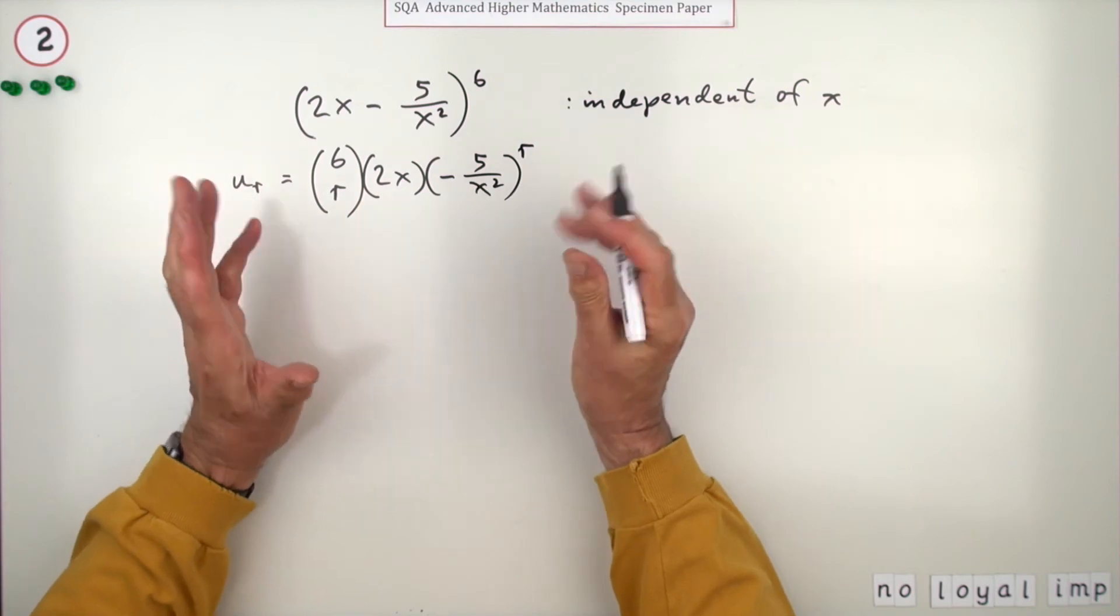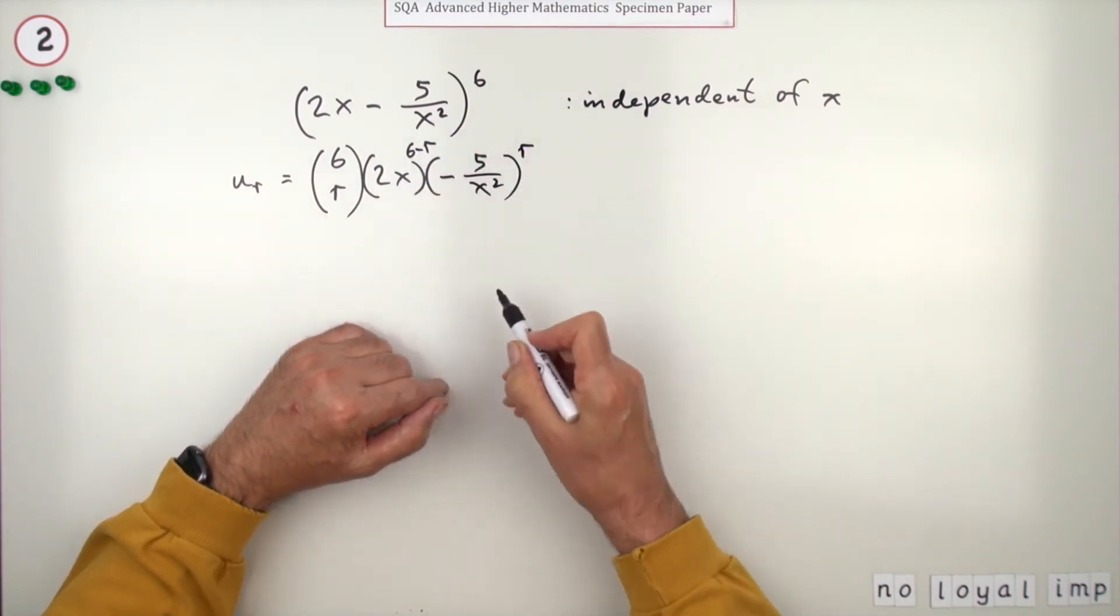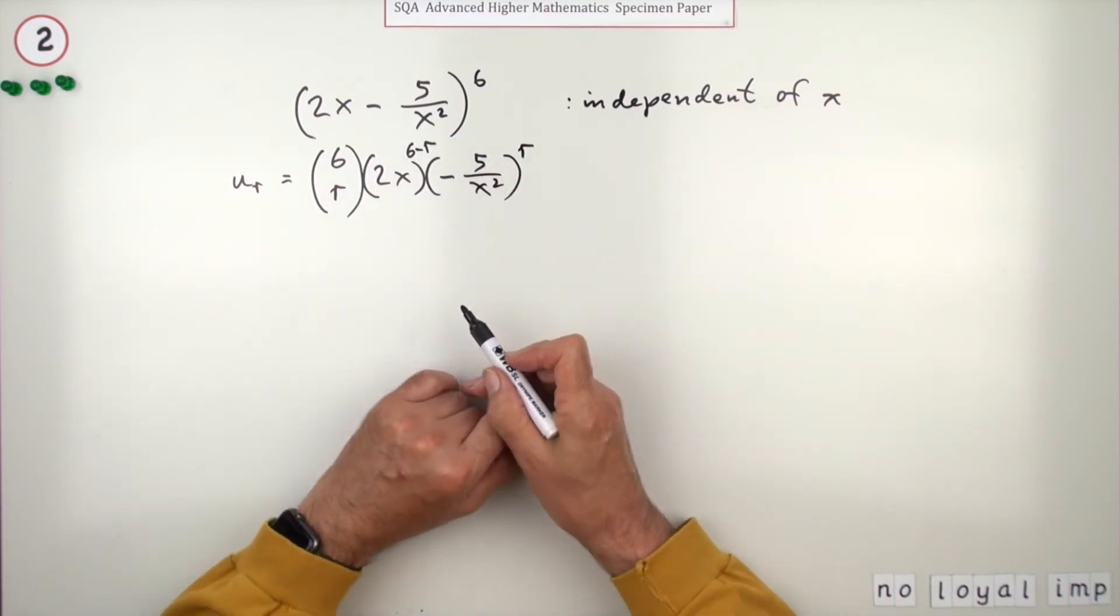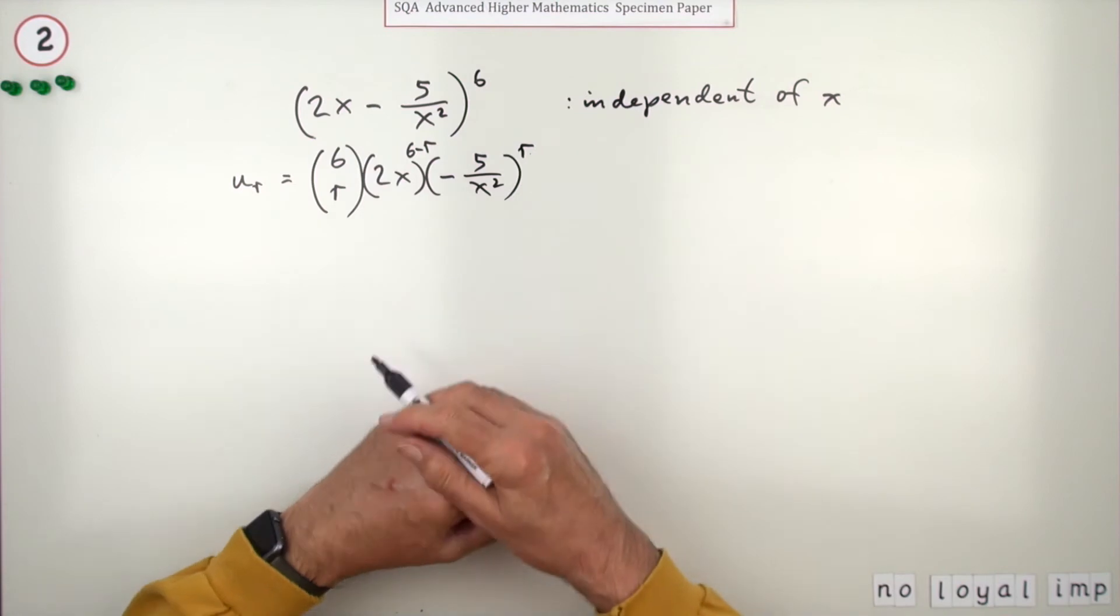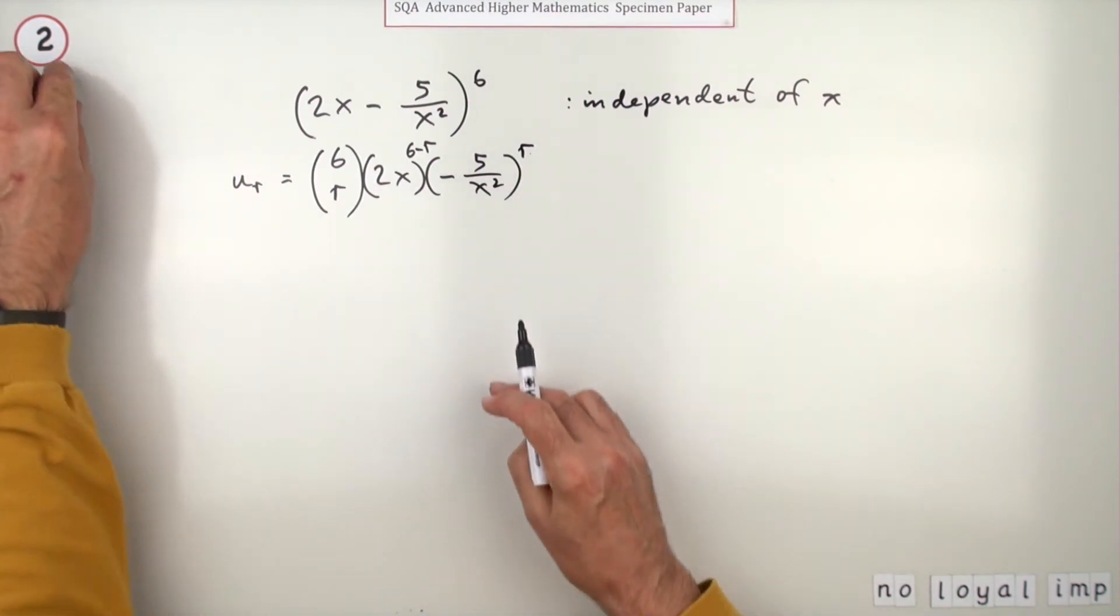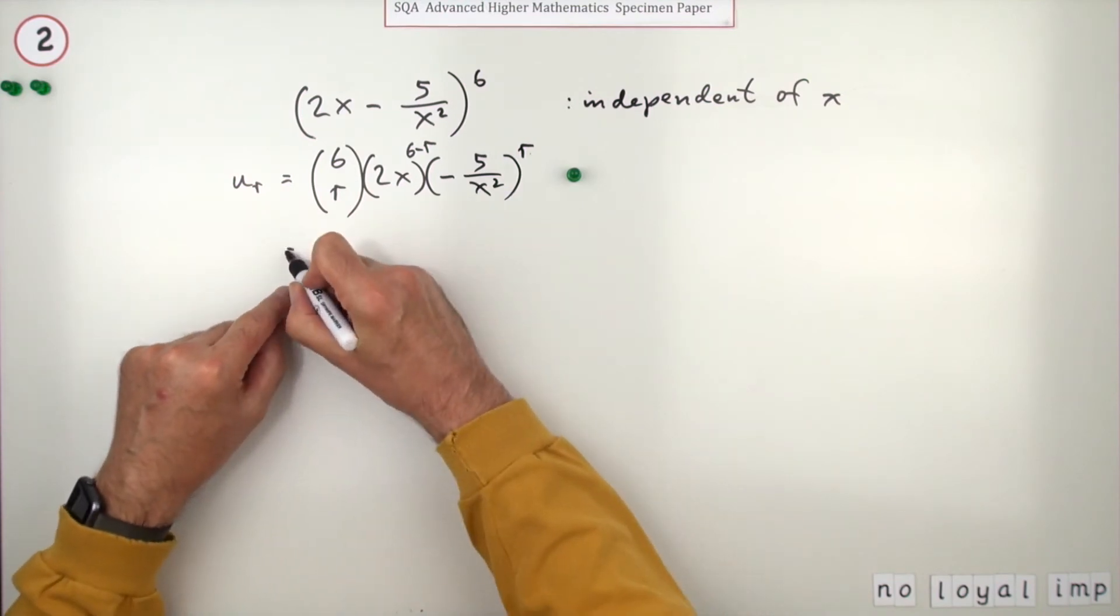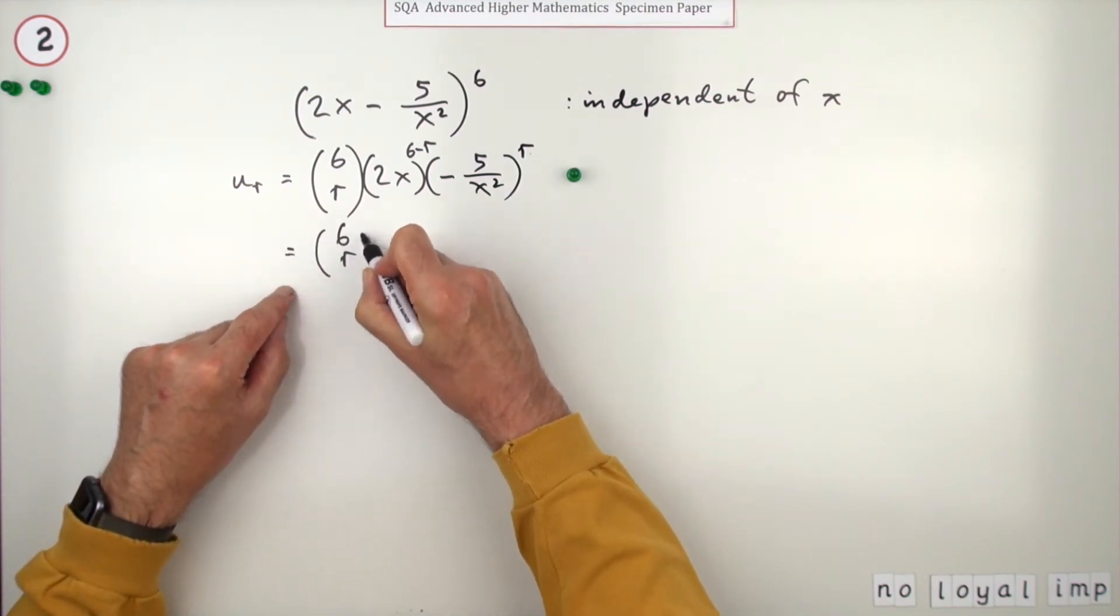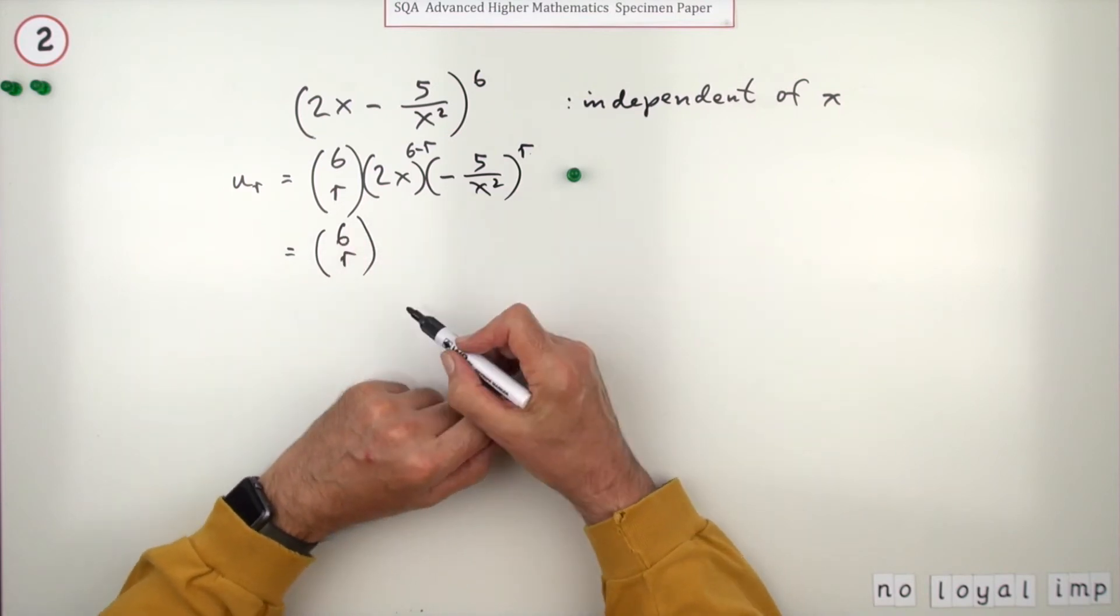But you could have them the other way around and you'd still find the correct term. So that means this must be the one that goes 6 minus r. As r climbs, this drops. In all cases these two powers should add up to six. Well, doing that gets the first mark, but you have to simplify it. Simplify means pull out the numbers and keep the variables separately.